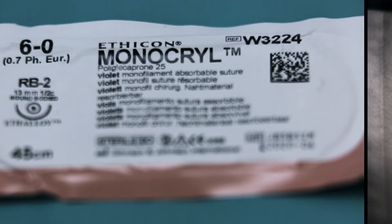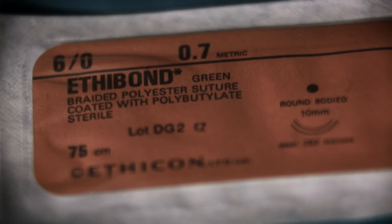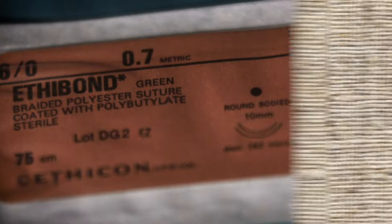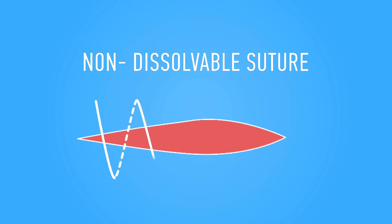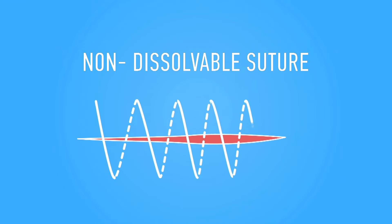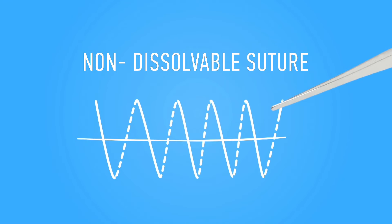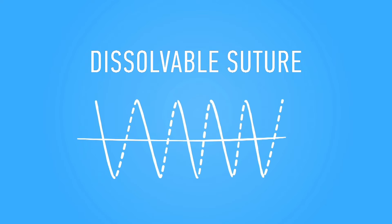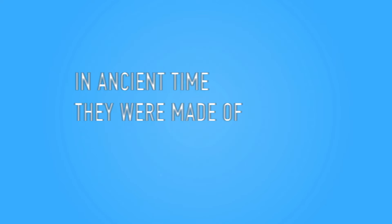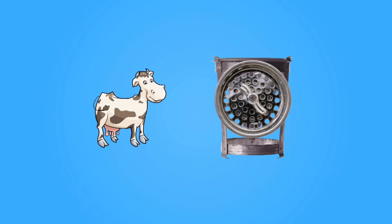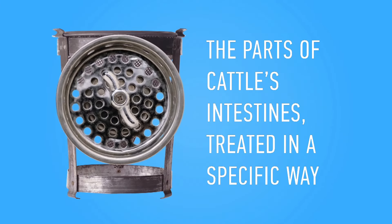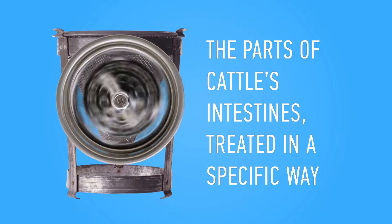So, how do both types of medical sutures work? Everything is clear when it comes to non-dissolvable sutures — it is a material which, when the wound is fully healed, is removed by a surgeon. The dissolvable ones are a different story. In ancient times, they were made from cow intestines, treated in a very specific way.